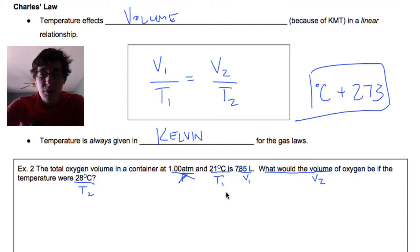So let's fill in our variables. Temperature one is 21, but we have to add that to 273. Our volume is 785, so we're just going to do 785 over 21 plus 273 is 294, so 294 equals what would the volume be? It's asking about volume two, so this is going to be x over 28 plus 273. Let me check my math here, this is 301.